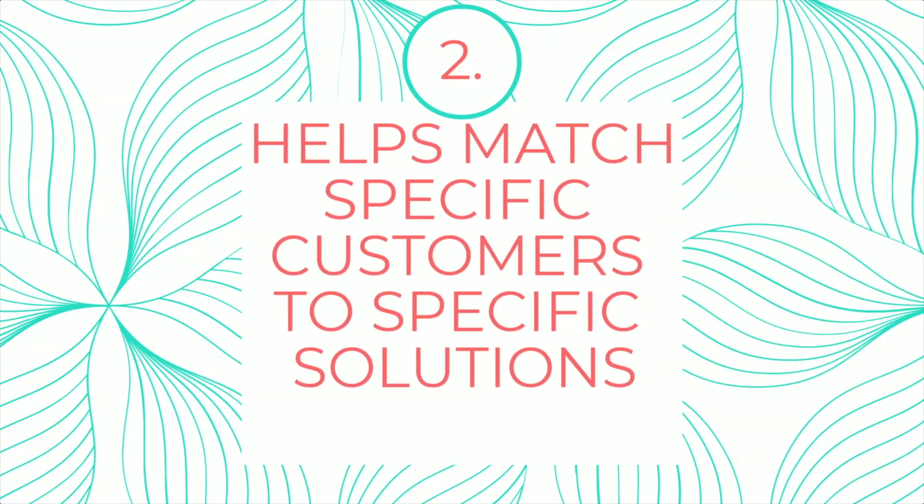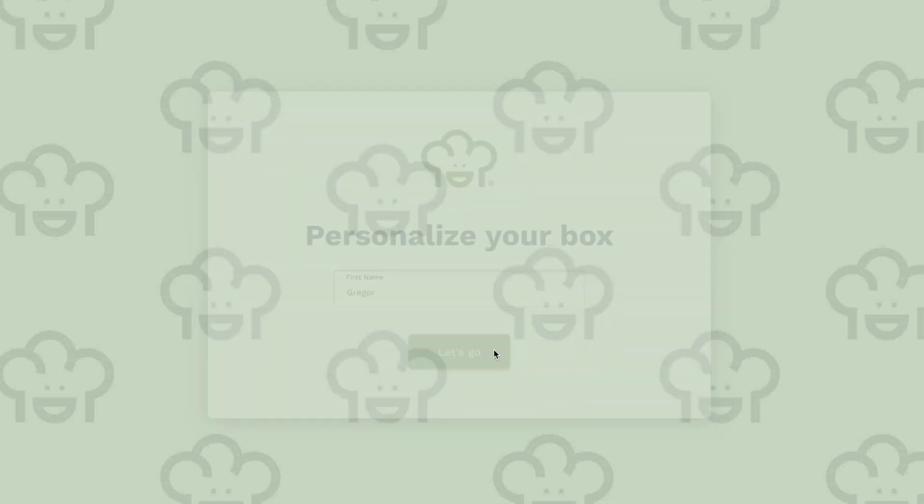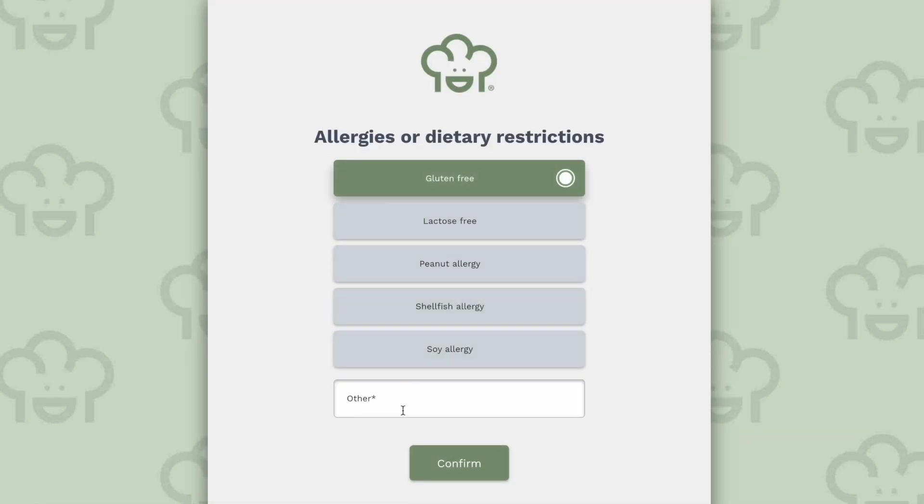Customer onboarding exists to prevent this exact issue. Once you know specifically what each customer needs, you can recommend the best products and help them understand why you chose it. Secondly, it helps you match specific customers to specific solutions. An onboarding survey is basically a series of questions — the more you learn, the more specific and helpful you can be. For example, if you're a nutrition company, you onboard customers by asking about their diet, what foods they avoid, whether they're allergic to something, or what they expect from you.